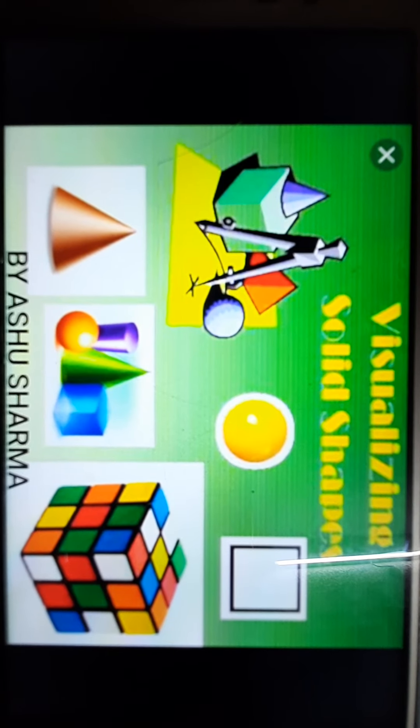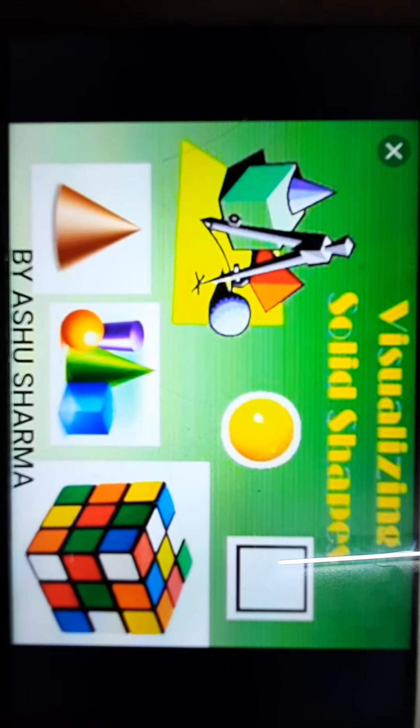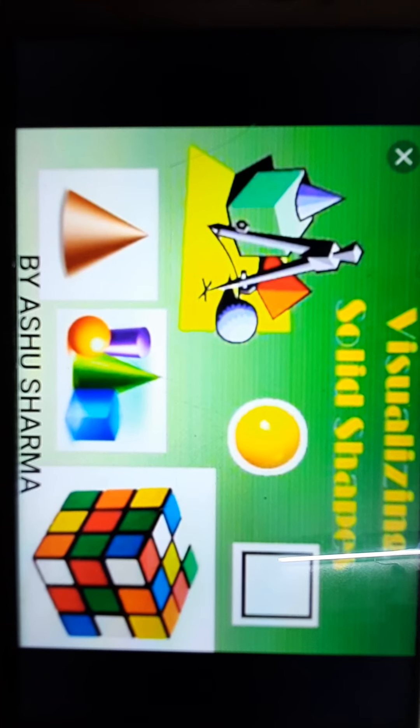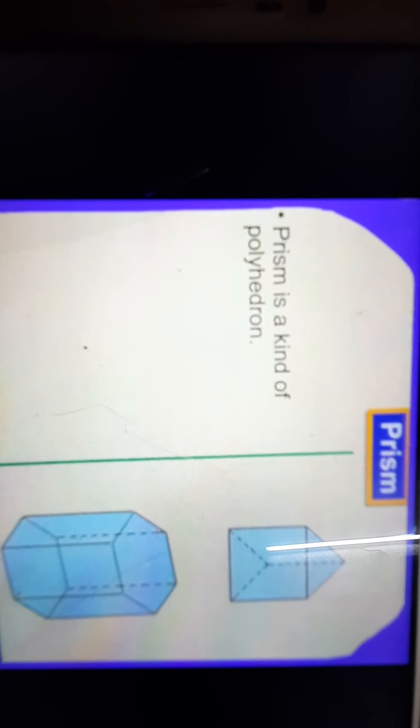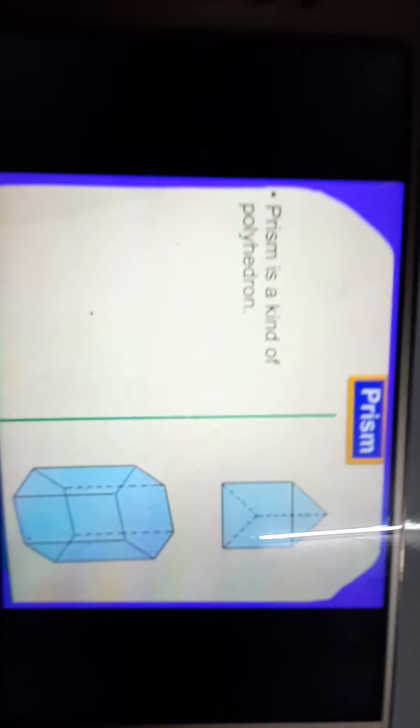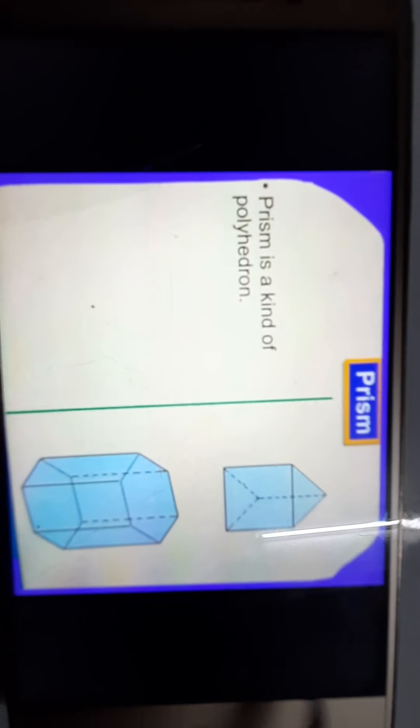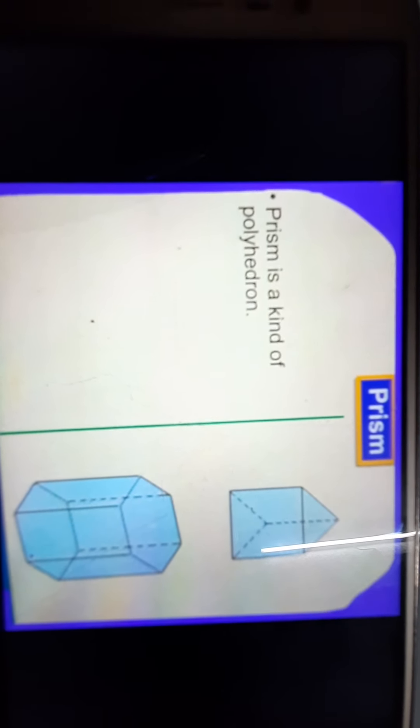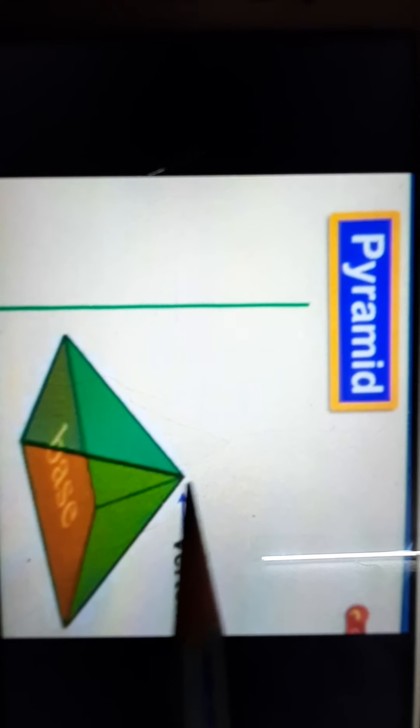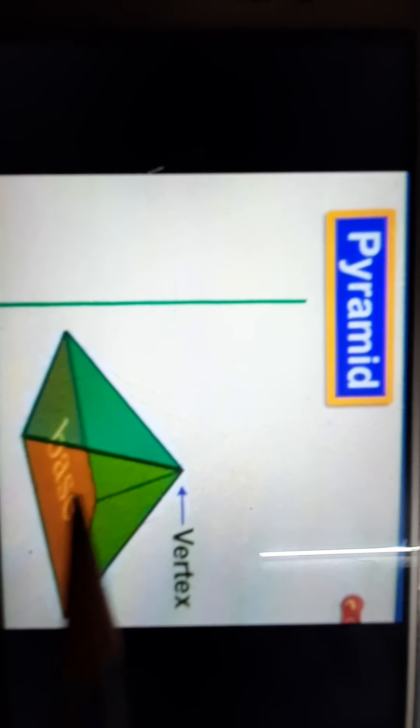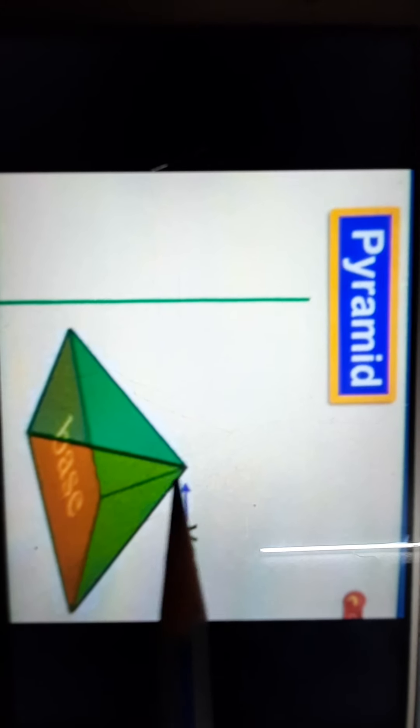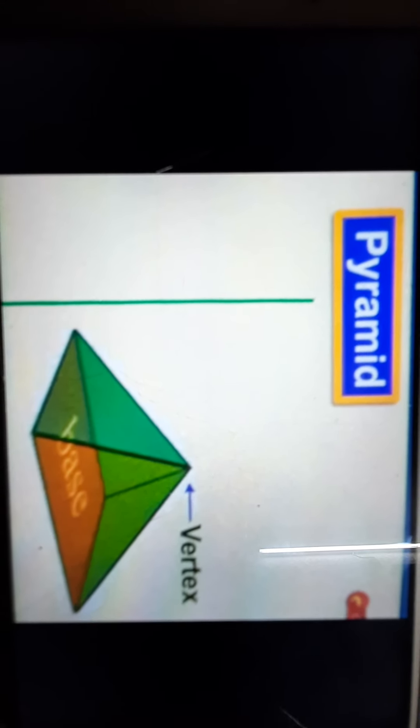Hello my dear students, welcome back to your mathematics class with your Aashu ma'am. We are doing Unit 10: Visualizing Solid Shapes. Till now we have done polyhedrons and the two types of polyhedrons - prism and pyramid. What is the difference between the two? Let us quickly revise. A prism is the one whose top and base both are congruent. The pyramid is that in which the top is in the vertex form, that is pointed. The base is of any shape, means minimum triangle, but the top is always pointed. So this is pyramid.